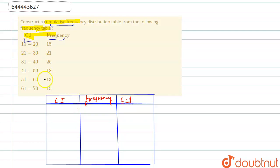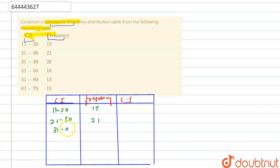In class interval 11 to 20, the frequency is 15. For 21 to 30, it is 21. For 31 to 40, it is 26. For 41 to 50, it is 18. For 51 to 60, it is 13. And for 61 to 70, it is 15.